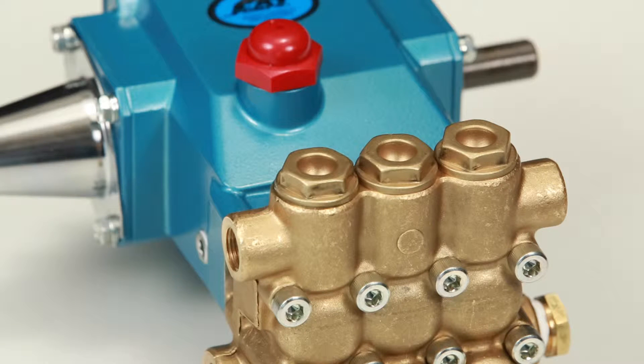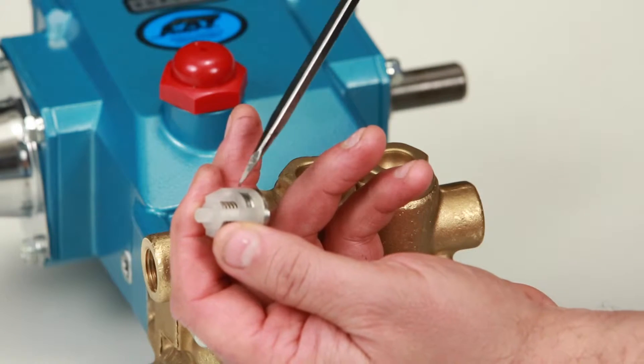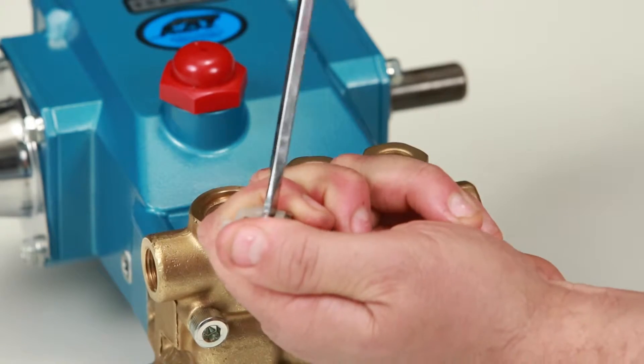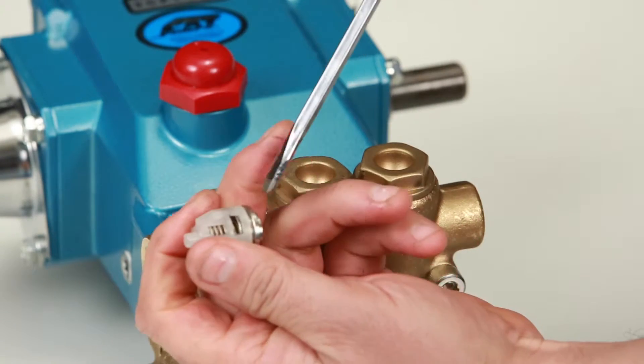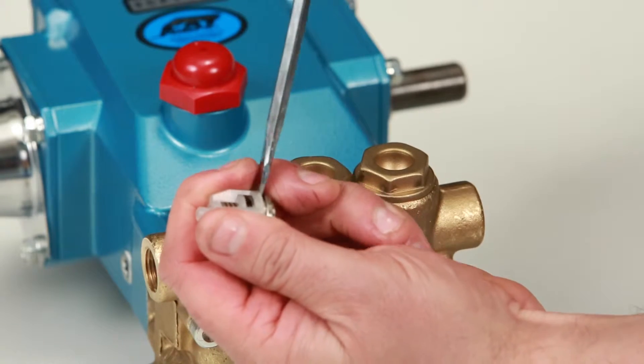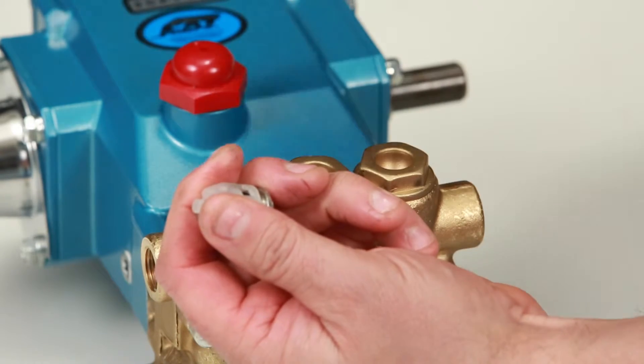If the valves are going to be reused, serviced, or inspected, the assembly can be dismantled. Start by inserting a flat tip screwdriver through the spring retainer just above the valve and twist to create a small gap between the valve retainer and valve seat. Place the flat tip screwdriver in the gap and twist to completely separate.